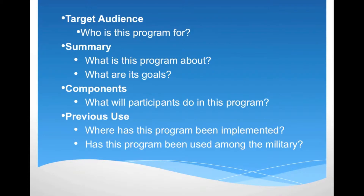Now that you have the Strong African American Families fact sheet, you see that many key pieces of information are provided to narrow the focus of your program search. The first section you will notice on the program fact sheet is the target audience. This section states who this program is intended for. The specified target audience is also identified by an icon located in the top right-hand corner of the fact sheet. In the Strong African American Families fact sheet, the program target audience is rural African American youth ages 10 to 12 and their families. Also notice the Families icon in the top right.